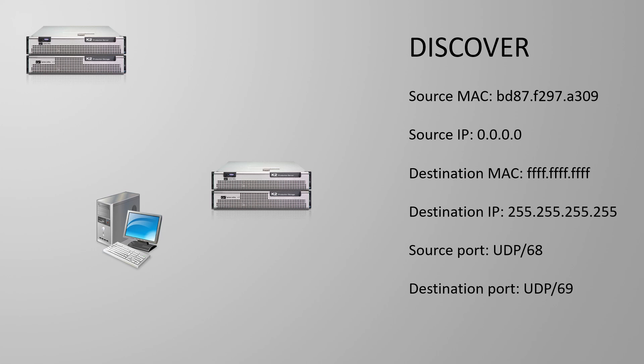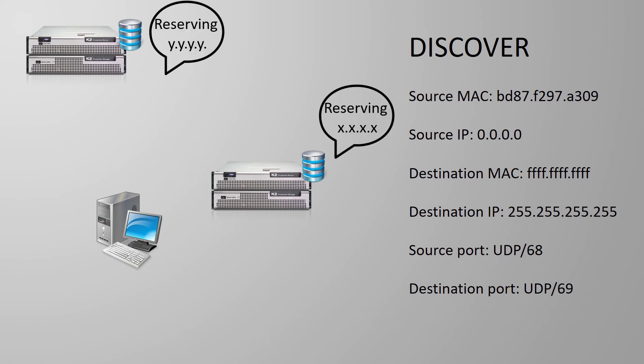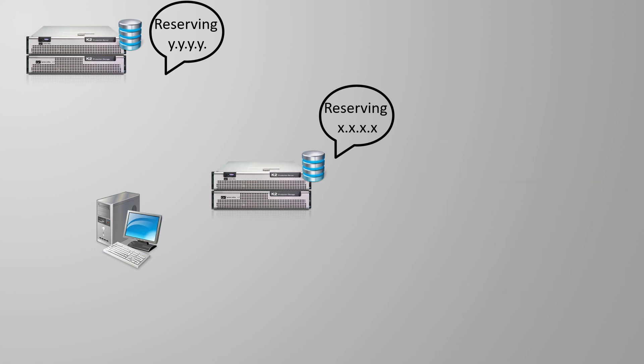The DHCP server contains a database or pool of IP addresses that are valid for the local network. When it receives the discover message it knows that the new computer needs help. It looks in the address pool, finds an available IP and temporarily reserves it. It will then put this information in a DHCP offer message and send it back to the client.